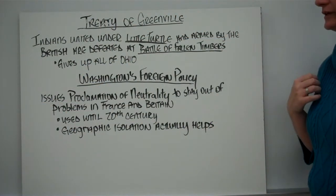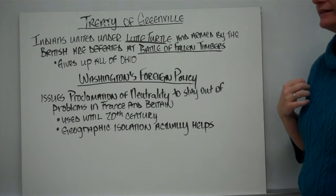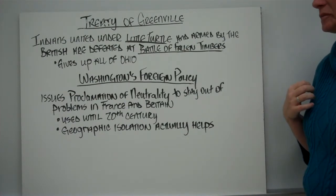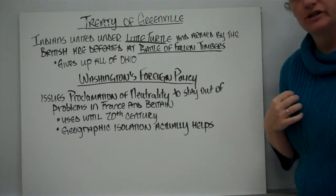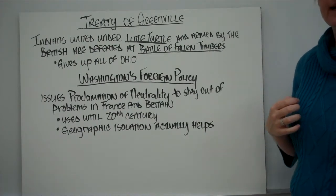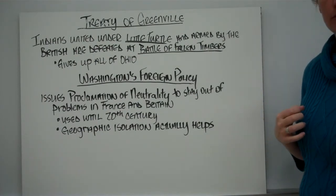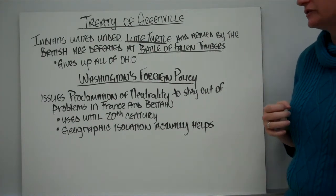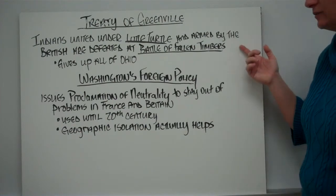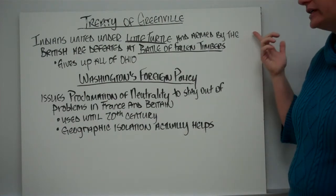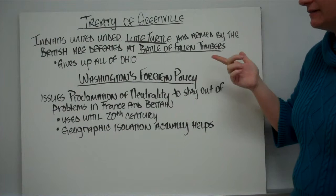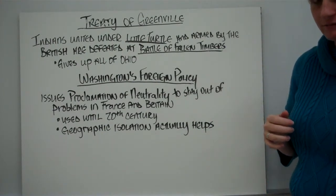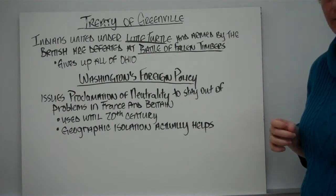Regarding the Treaty of Greenville: the Indians were united under Little Turtle and armed by the British, who were very dissatisfied and wanted to make things difficult for the young United States. Finally, the Indians were defeated at the Battle of Fallen Timbers. In the Treaty of Greenville, they ended up giving up all of Ohio, which was a significant amount of land.